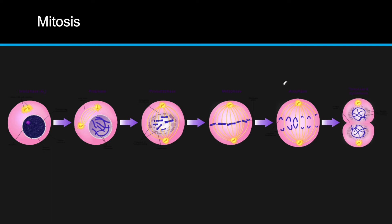The last phase of mitosis is telophase. The nuclear membrane forms around the chromosomes as they uncoil. The cell is re-entering interphase, the chromosomes are starting to unwind again, and the cleavage furrow is starting to form.